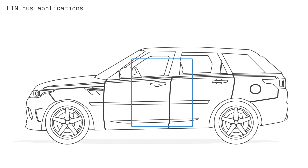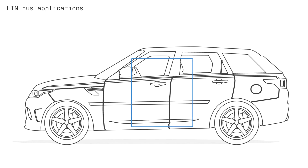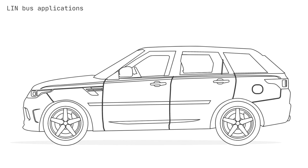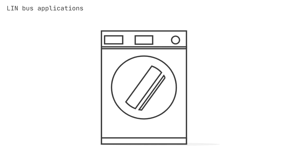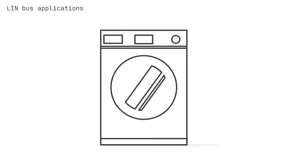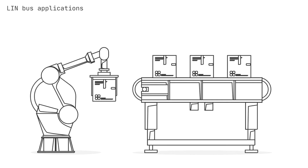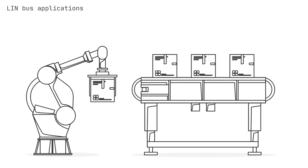In the car doors, a cluster may involve side mirrors, windows, seat control, and locks. In the seats, a cluster may involve position motors or pressure sensors, while other automotive use cases include window wipers, rain sensors, headlights, and airflow. Further, LIN bus is also being used in other industries, for example in home appliances like washing machines, or in industrial automation, for example manufacturing equipment.